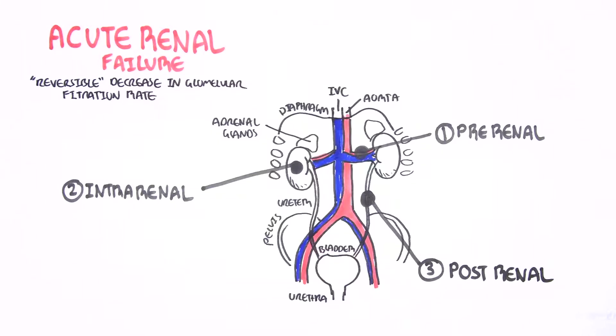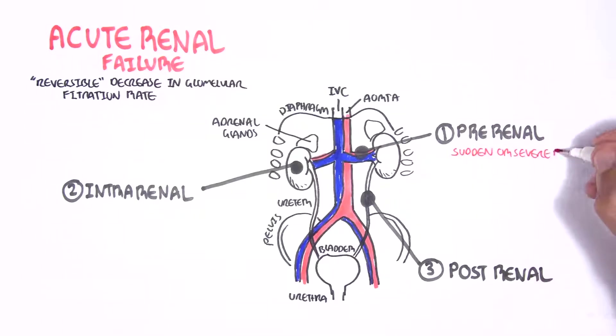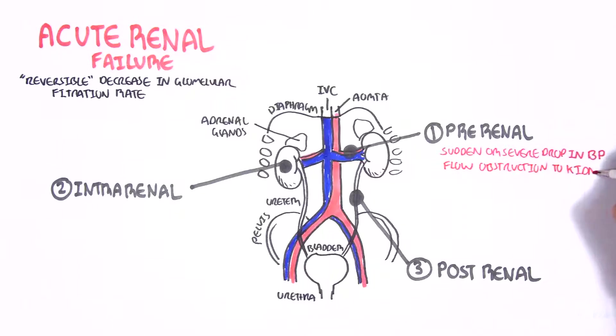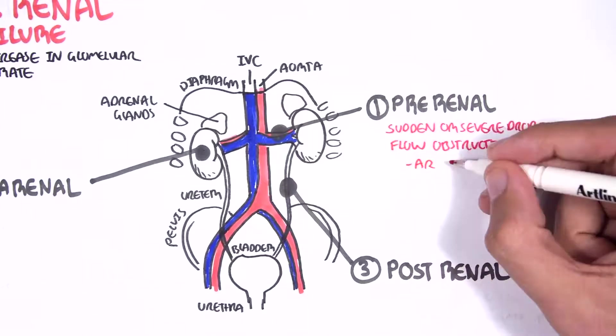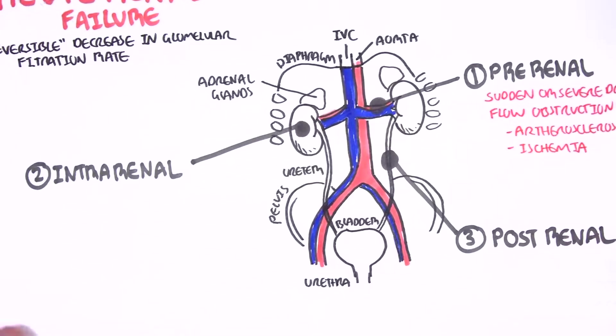Pre-renal cause of acute renal failure can be due to a sudden or severe decrease in blood pressure, or it can be due to a flow obstruction to the kidneys. This can be due to atherosclerosis or some form of ischemia, stenosis.